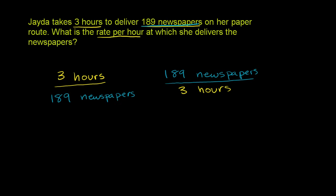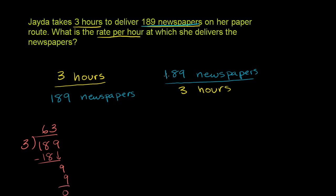If you divide 189 by 3 — let's do it over on the side right here. 3 goes into 189: 3 goes into 18 six times; 6 times 3 is 18. Subtract, bring down the 9 — 18 minus 18 is nothing. 3 goes into 9 exactly 3 times; 3 times 3 is 9, no remainder. So 189 divided by 3 is 63.